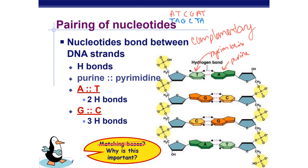These base pairs are held together by hydrogen bonds. What you need to know right now is that hydrogen bonds are a relatively weak bond, meaning they can be broken relatively easily so that we can access the information. Hydrogen bonds hold those purines and pyrimidines together as they complementary base pair to one another.